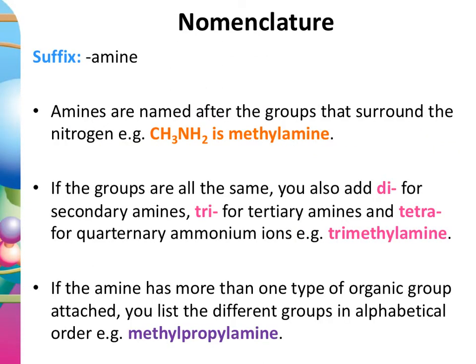In many instances, 'amine' is at the end of the compound name as a suffix. The names are usually focusing on what groups are attached to the nitrogen. So methylamine has one methyl group. If we have more than one group of the same type, we use di-, tri-, or tetra- as prefixes. For example, trimethylamine would be a nitrogen with three methyl groups attached to it.